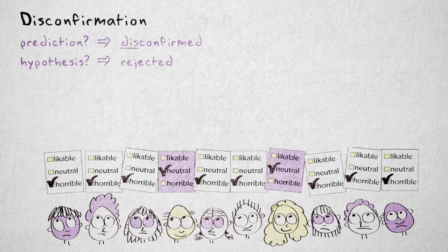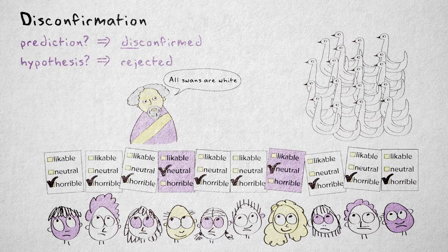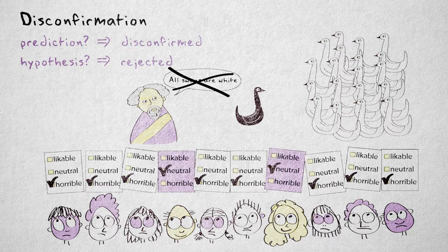If our hypothesis states that all swans are white, and we then find black swans in Australia, we can very conclusively reject our hypothesis.